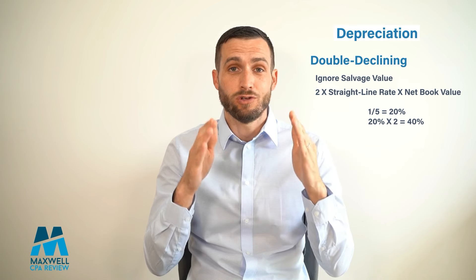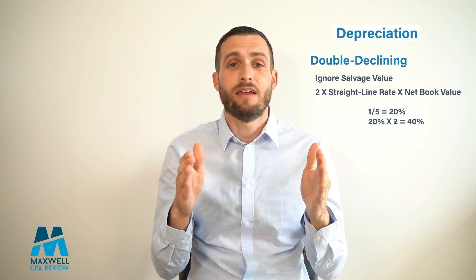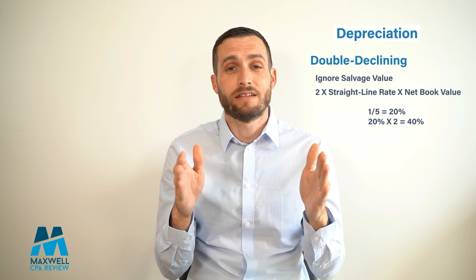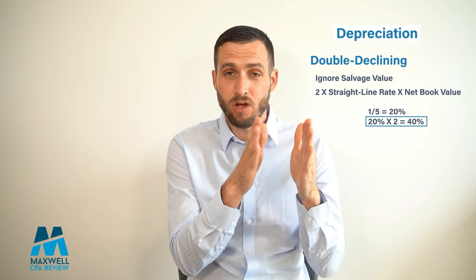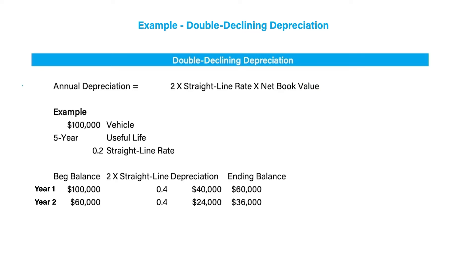For example, with a five-year useful life asset, in the first year of double declining instead of depreciating at 20% we depreciate at 40%. Consider a $100,000 vehicle with a five-year useful life. In year 1, we take $100,000 times 1/5 times 2, or 40%, giving year 1 depreciation of $40,000, and a year 1 ending balance of $60,000.